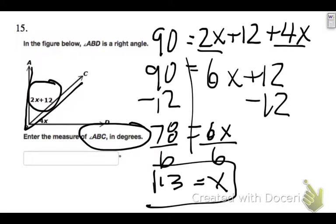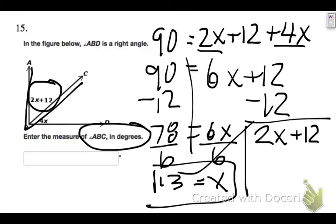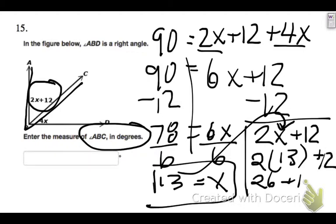So I need to take my answer of 13 and put it where the x goes in 2x plus 12. I need to take 2 times 13 and add 12 to it. 2 times 13 is 26, plus 12 is going to be 38 degrees.